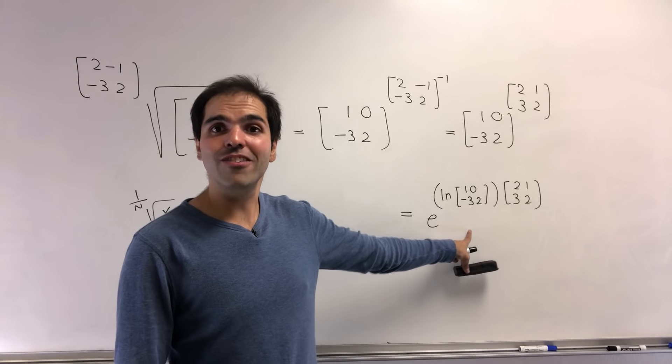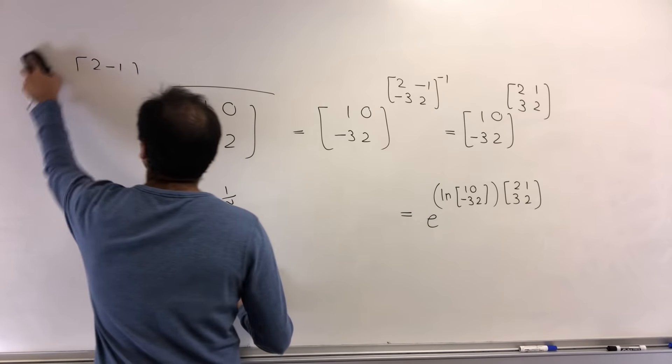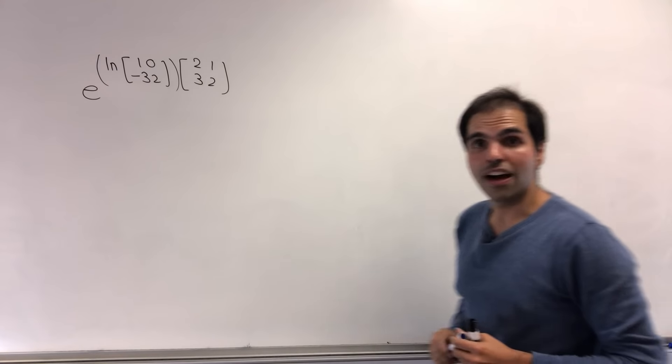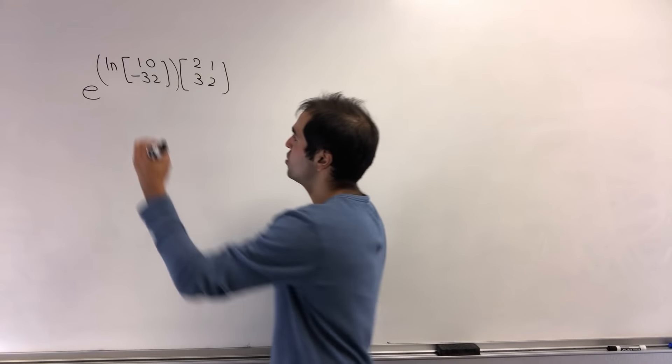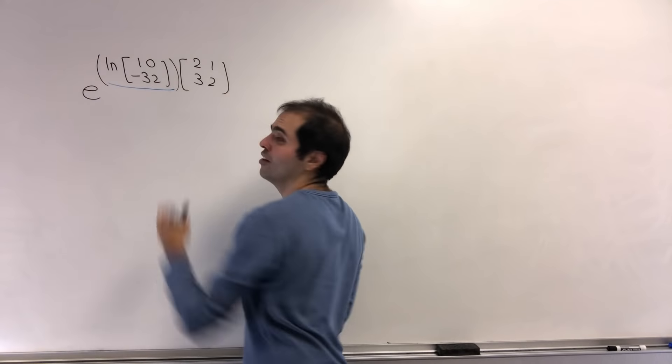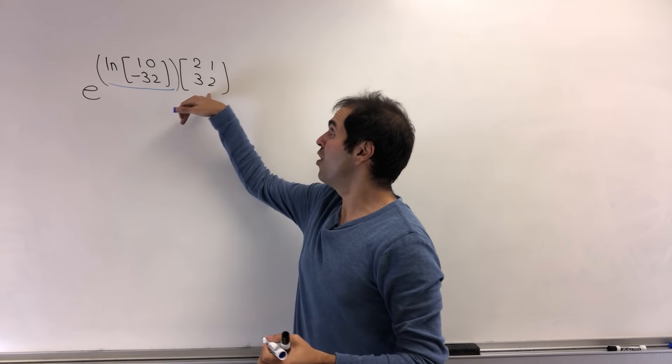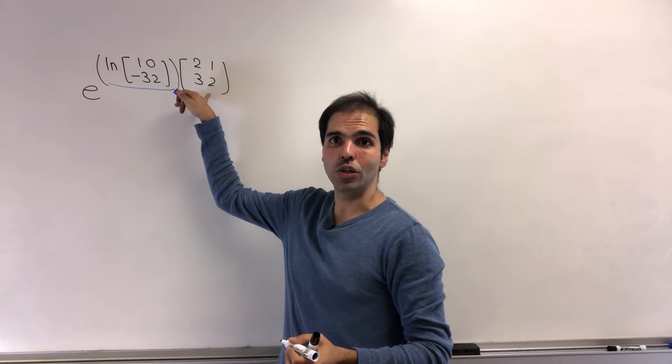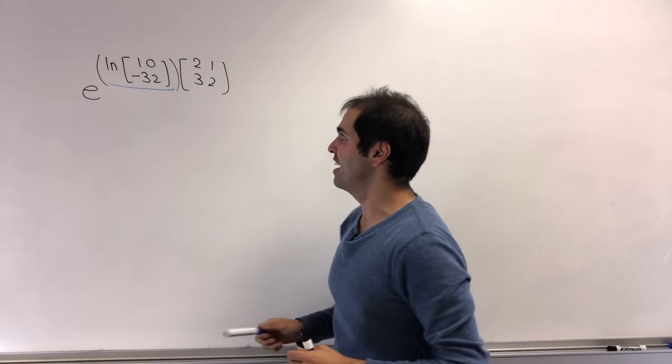And now the question is, how do we evaluate this? To evaluate this, we want to do three things. We first want to calculate ln of this matrix. Then multiply it by 2, 1, 3, 2, and finally exponentiate it.